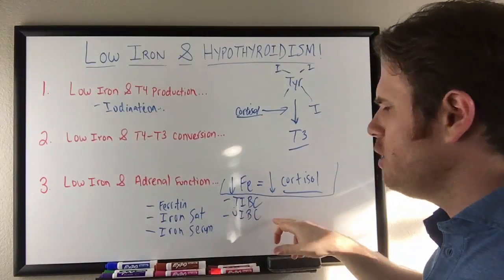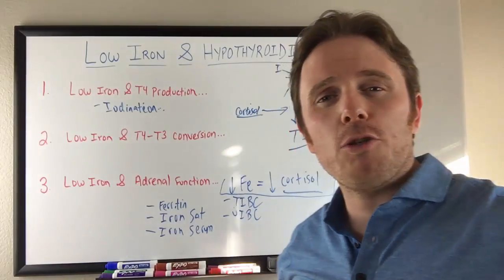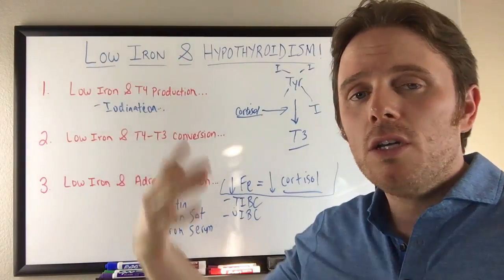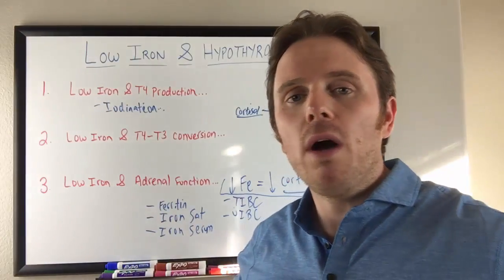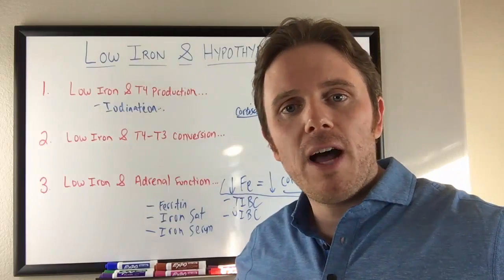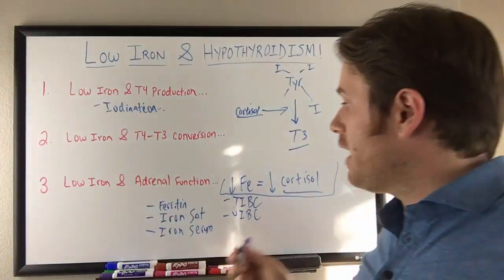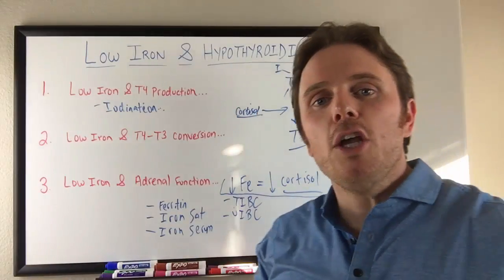Ferritin, iron sat, iron serum, TIBC, UIBC. Your typical medical doctor may look at RBC, hemoglobin and hematocrit and see if they're all low. So RBC below 4.1, hemoglobin below 11.5, hematocrit I think low 40s. That's off the top of my head. But that'll give you a pretty good idea of how to analyze your iron levels.